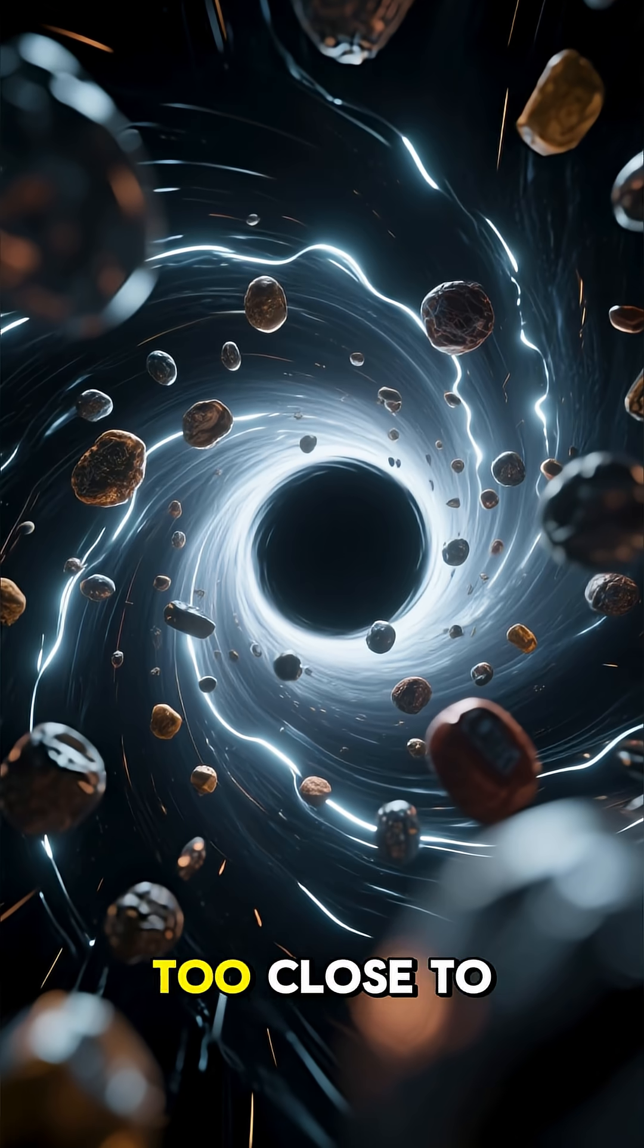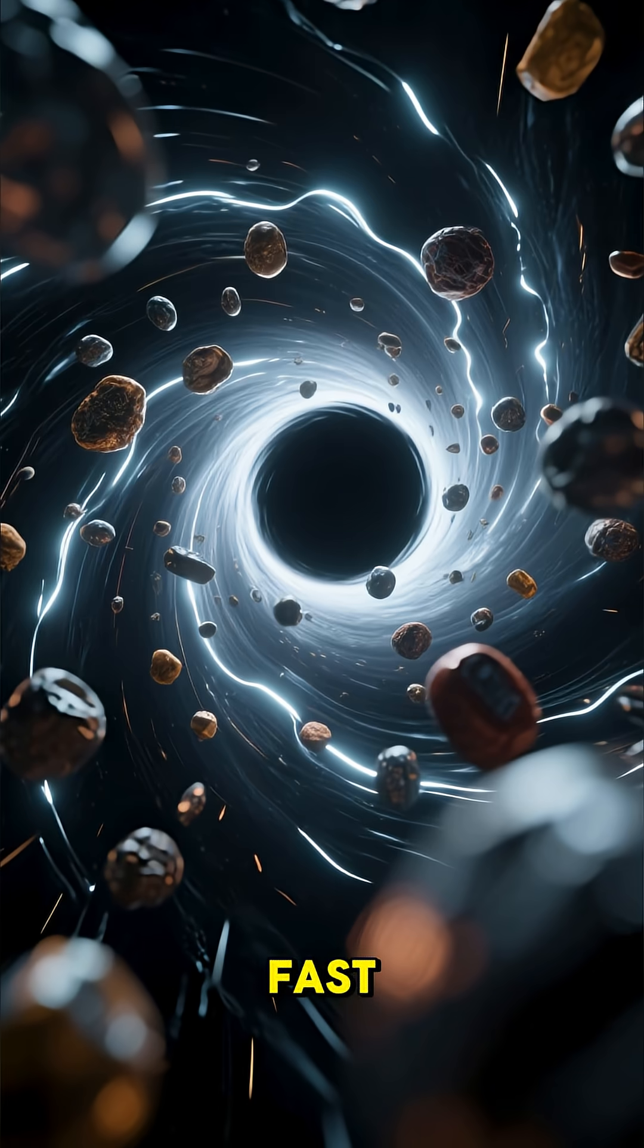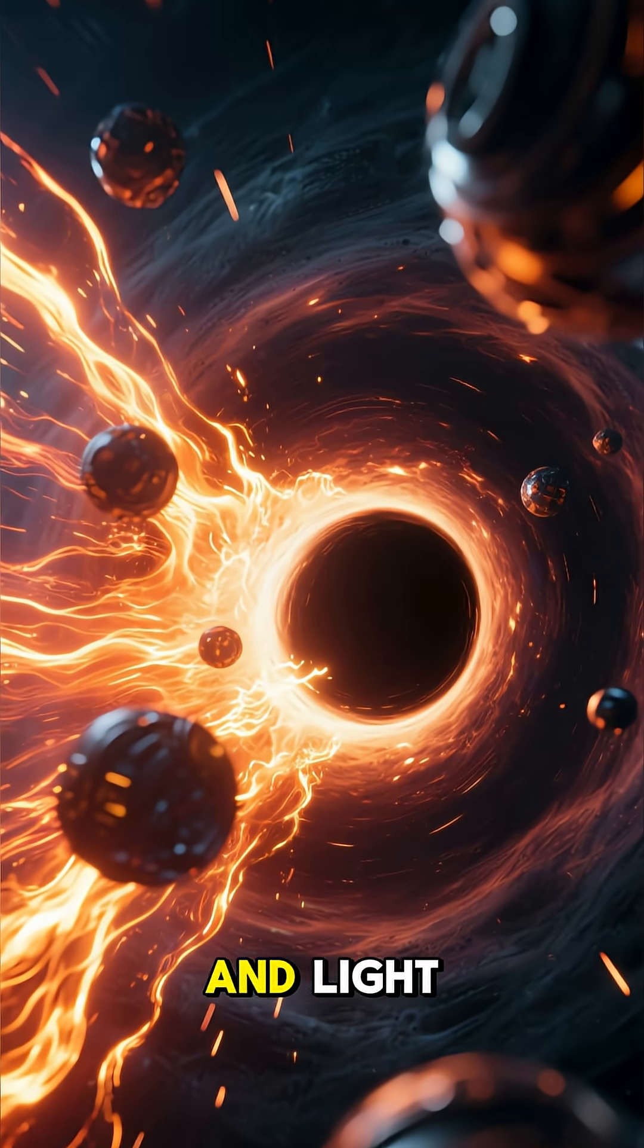Number 2. When something gets too close to a black hole, it starts to spin around really fast. This creates a lot of heat and light.